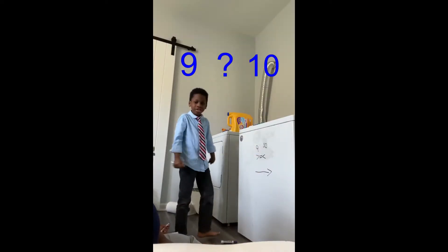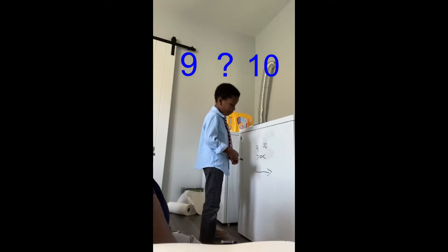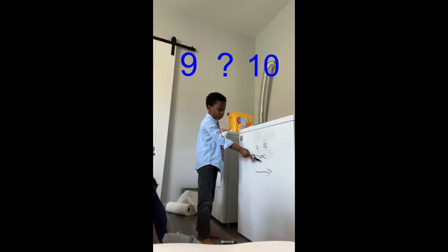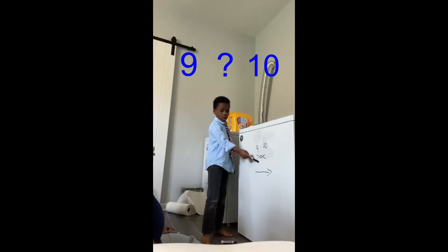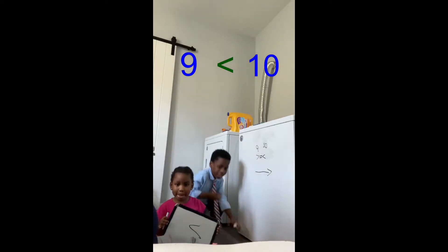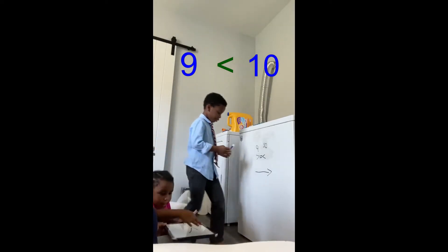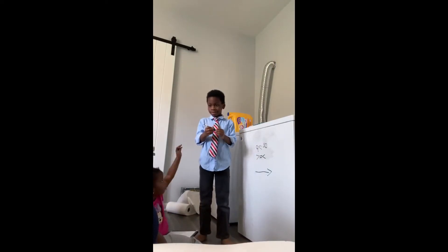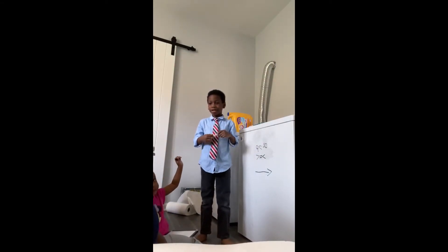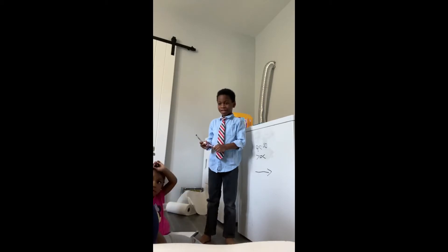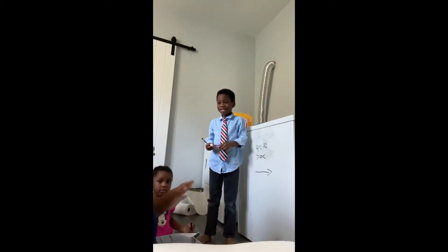Here's the hard one. What symbol belongs here — less than, equal, or greater than? Less than. Yes, that is correct. Less than. You've done such a good job, and that is how you do greater than, less than, and equal to. Class dismissed.